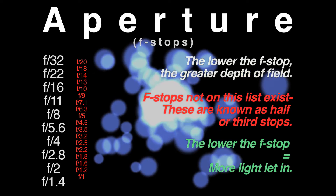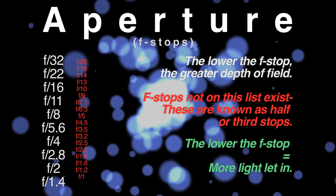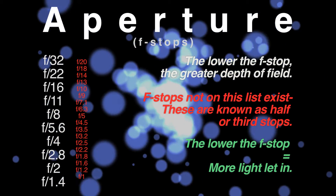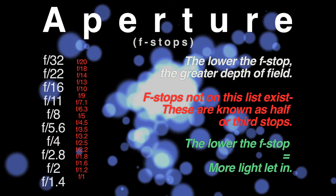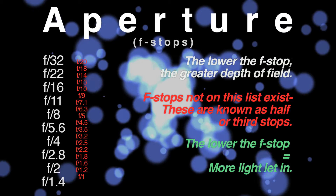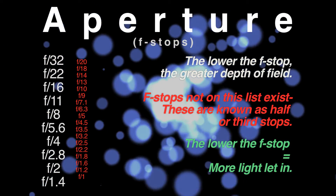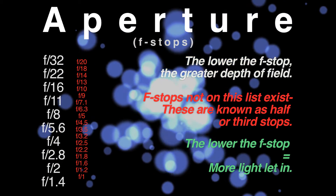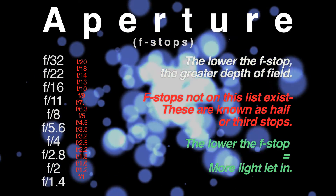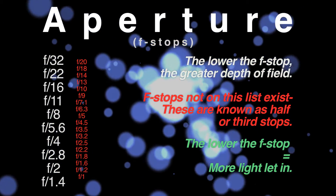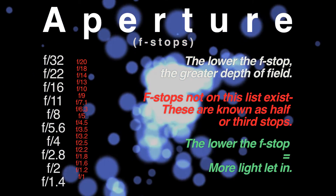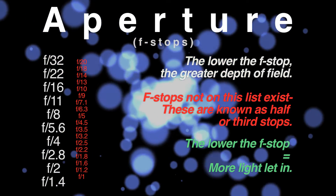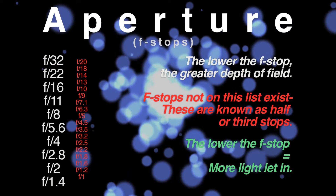First up is aperture, which is measured in f-stops. I have all the major f-stops listed below on the left-hand column, and I tried to make this as simple as possible by laying out all the basics. Basically what you want to know is that the lower the f-stop, the more light you're letting into the lens. When buying lenses, you want to go typically with one that has the lowest f-stop possible — like f2, 1.8, or even 1.4 depending on your budget. Specifically for videographers, you want the lowest f-stop possible so you can have the greatest depth of field. That's very key for videographers, while photographers don't necessarily need that.